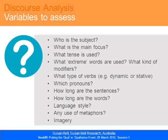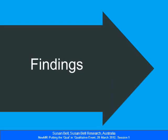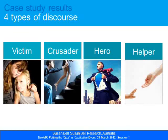I'll go now to the findings, talking in detail about one type. What we discovered was that there were four types of discourse in the way these charities engage with their target market: a victim discourse — which is what we'd expect from core research — plus a crusader discourse, a hero discourse, and a helper discourse. I analysed each website, grouped them by how they express themselves, and isolated the key theme that gave each its name.